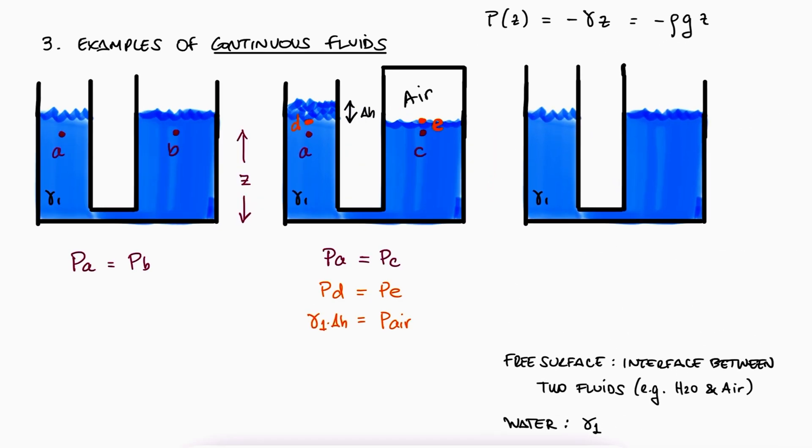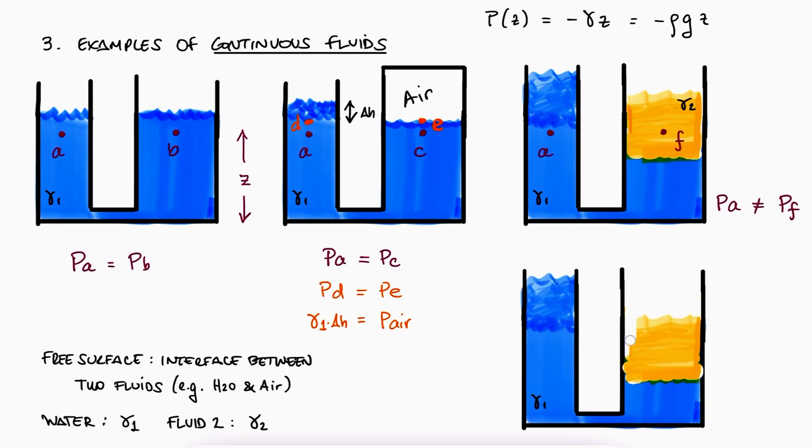Now, let's say that the right side is open again, but this time, we throw in a second liquid of specific weight gamma 2. This time, the pressure in A and the pressure in F would not be the same. Why? Because to get from A to F, we had to jump away from our original fluid. Even if we end up on the same fluid, in this case water, meaning we start with water and end with water, if the fluid is not continuous, if we had to jump between fluids to get from one point to the other, we cannot state that the pressures are the same.